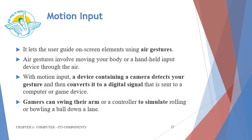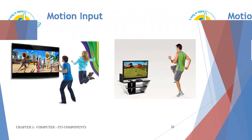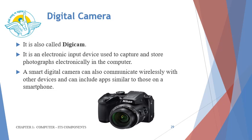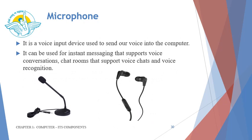Gamers can swing their arm or a controller to simulate rolling or bowling a ball down the lane. Digital camera, also called a Digicam, is an electronic input device used to capture and store photographs electronically in the computer. A smart digital camera can also communicate wirelessly with other devices and can include apps similar to those on a smartphone. Microphone — it is a voice input device used to send voice into the computer. It can be used for instant messaging that supports voice conversations, chat rooms that support voice chats, and voice recordings. Right now I am using a microphone to record my voice onto this video.